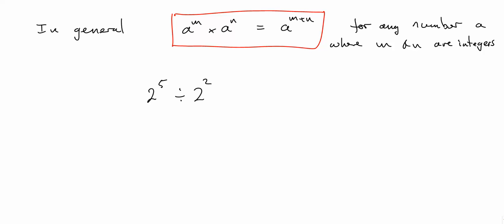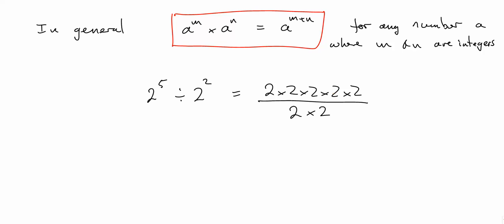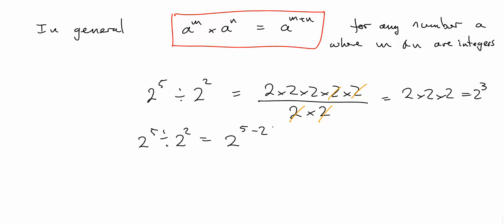Now let's look at division: 2 to the power of 5 divided by 2 squared. That would be 2 times 2 times 2 times 2 times 2 over 2 times 2. We can cancel two 2's from the top with the two on the bottom, and we're left with 2 times 2 times 2, which is 2 cubed. So 2 to the power of 5 divided by 2 squared is 2 to the 5 take away 2, to get 2 cubed.